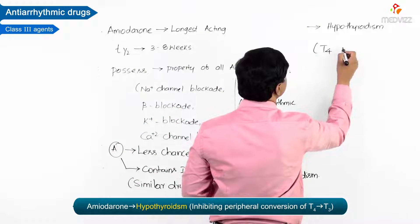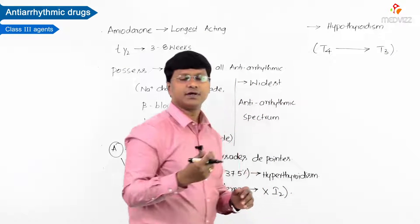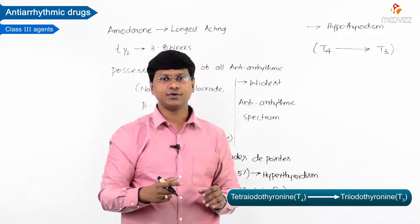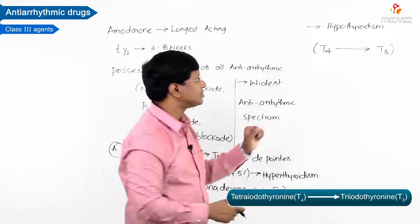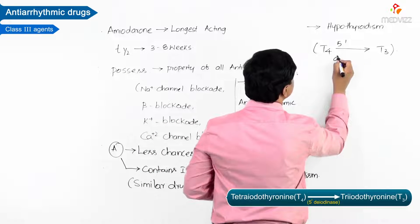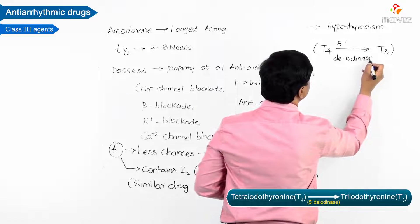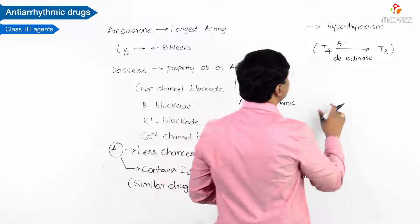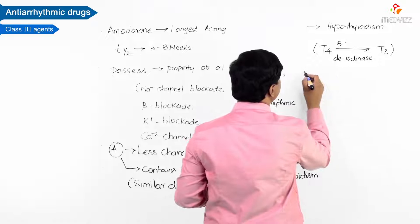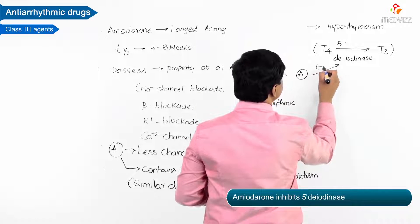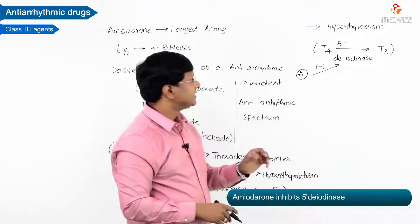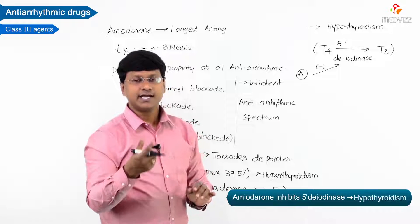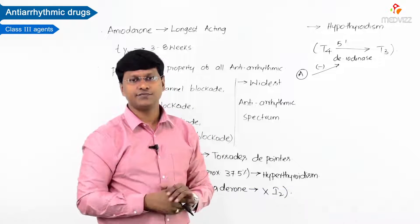Amiodarone causes hypothyroidism by inhibiting the peripheral conversion of T4 to T3. Normally, T4 (tetraiodothyronine) released from follicular cells is converted to T3 by the enzyme 5'-deiodinase. Amiodarone inhibits this enzyme, preventing T4-to-T3 conversion, causing hypothyroidism — since T3 is the active thyroid molecule.